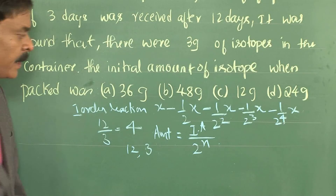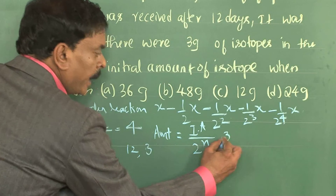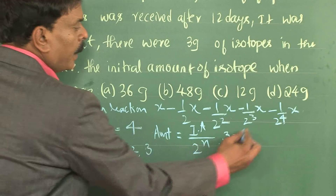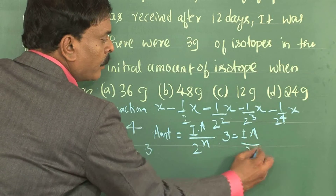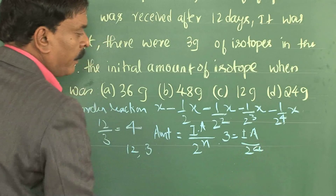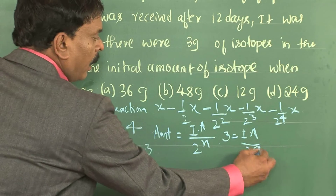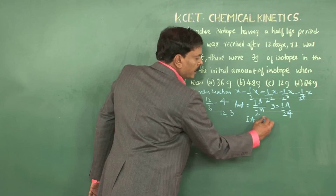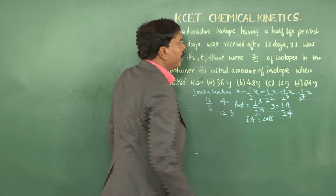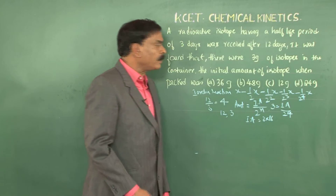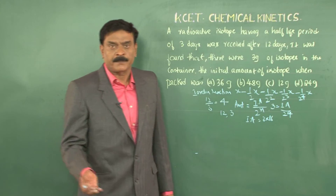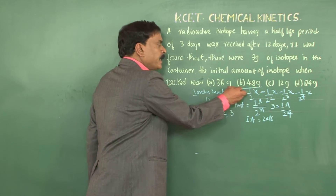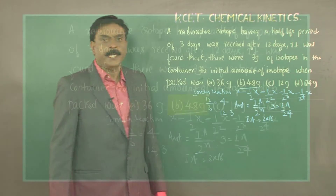The amount in the container: 3 = initial amount / 2⁴. Therefore, the initial amount = 3 × 16 = 48 grams. The right answer for this question is 48 grams.